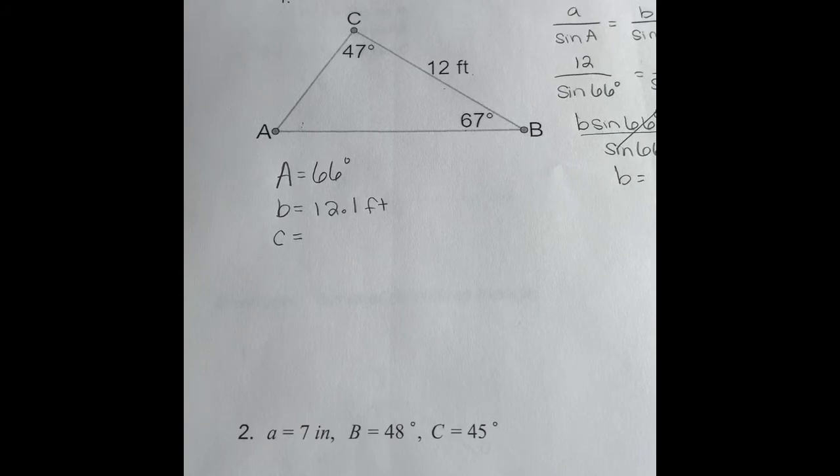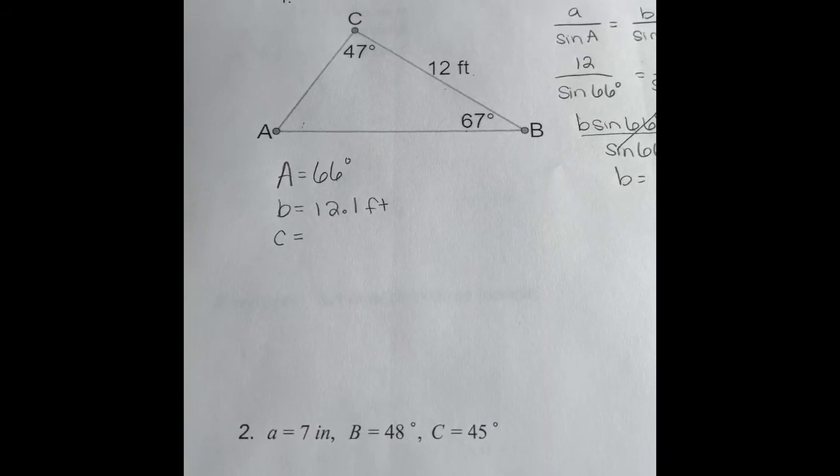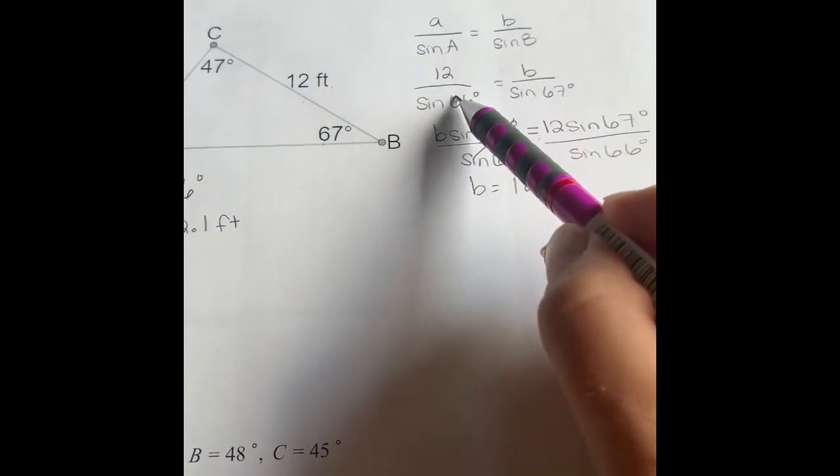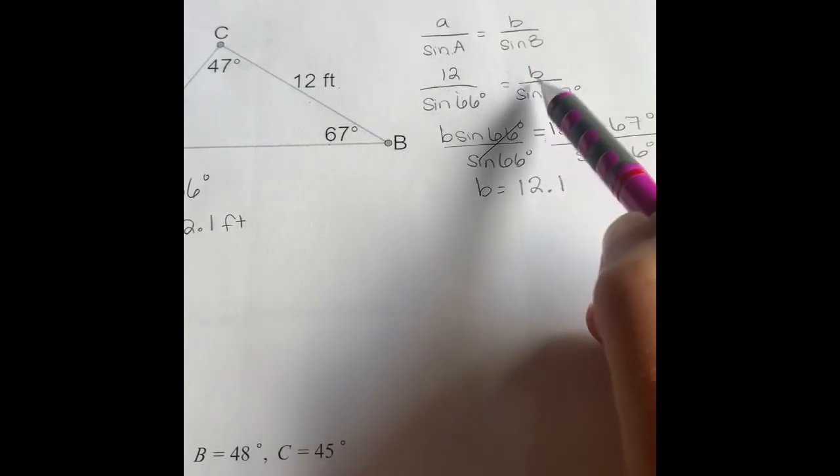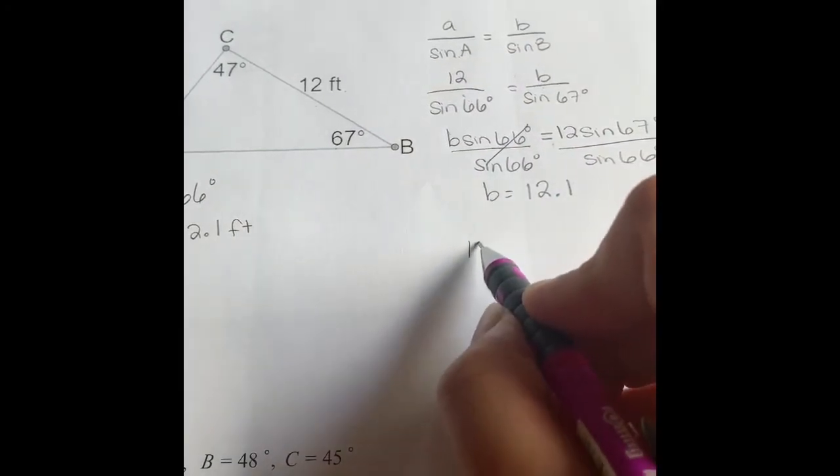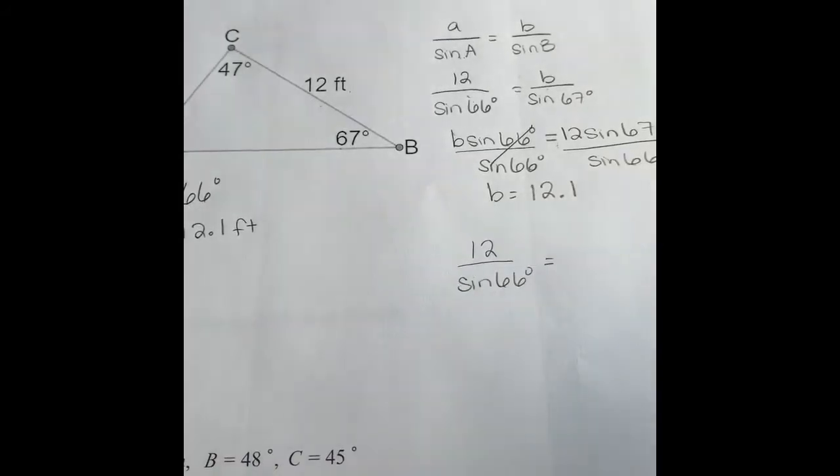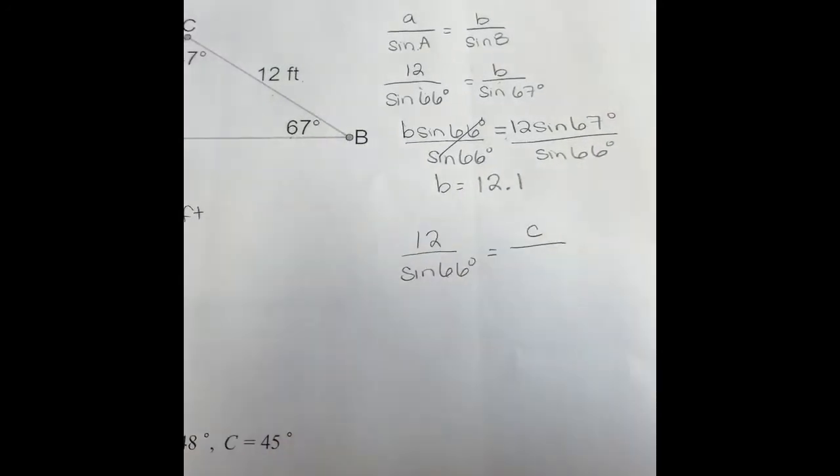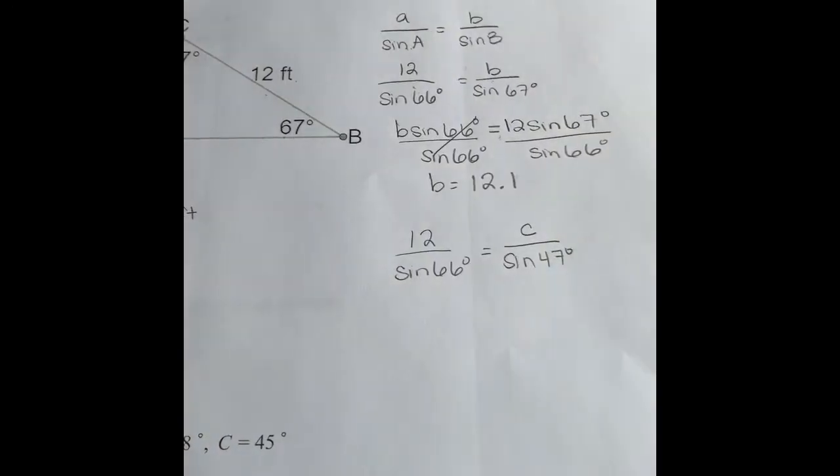That leaves us with side C. Again, we cannot use the Pythagorean theorem even though we know two sides because we do not have a right triangle. So we're going to have to do this process again. We can use the same first fraction because we were given these two pieces of information. Now this is going to change to be side C over angle C. So we'll have side A, which was 12, over the sine of angle A, which is 66 degrees. But now we're going to use the information for C. We don't know side C. That's what we're looking for. Divided by the sine of angle C, which was 47 degrees. Same thing here. We're going to cross multiply.